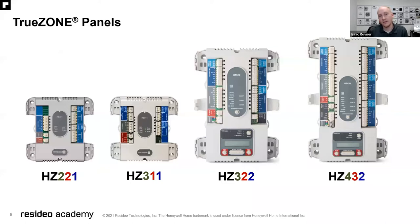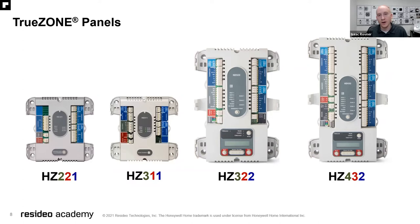The second digit is the number of heat stages and the third is the number of cooling stages. So for the HZ322, that's three zones, two heat, two cool. Within the literature and on our website, it's going to clearly label and provide the specs, so you'll know exactly what panel you need for the job.